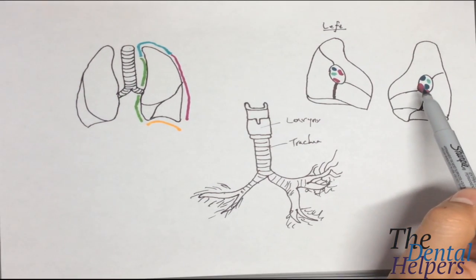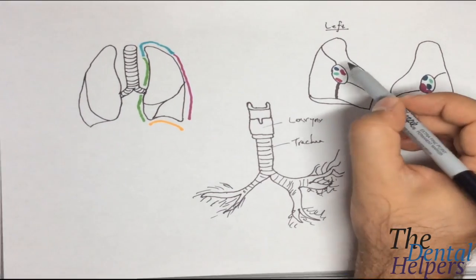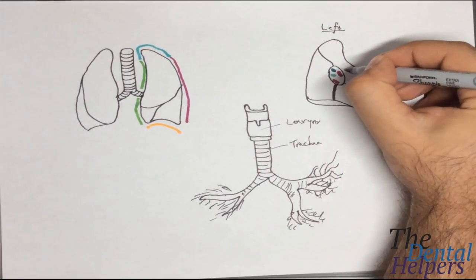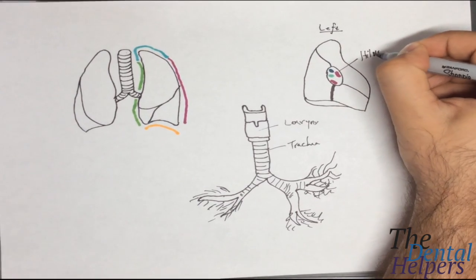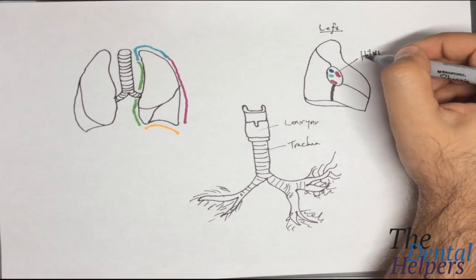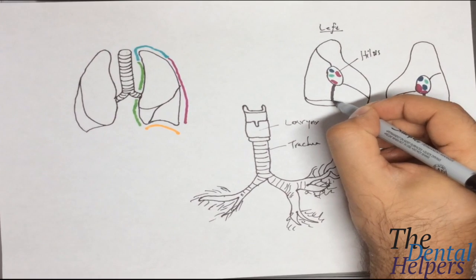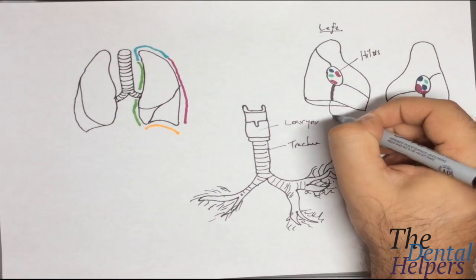If we're looking at the back side of the lung, this ring that we see right here is the hillis, and this thicker area right here is the pulmonary ligament.